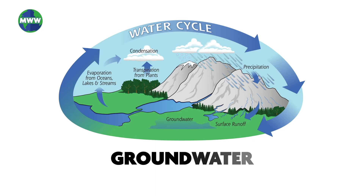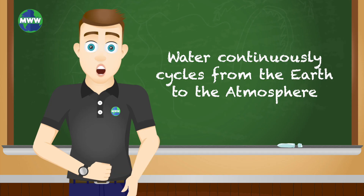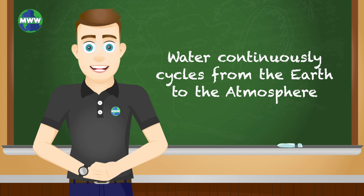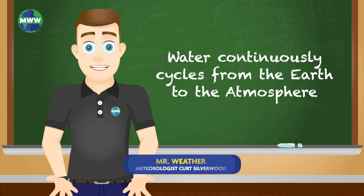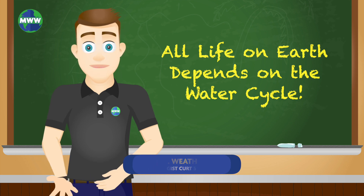Water from precipitation, lakes, and rivers may move deep underground — this is called groundwater. Using each of these processes, water continuously cycles from the Earth to the atmosphere. All life on Earth depends on the water cycle.